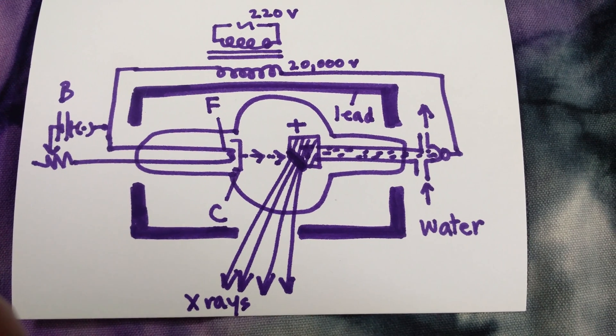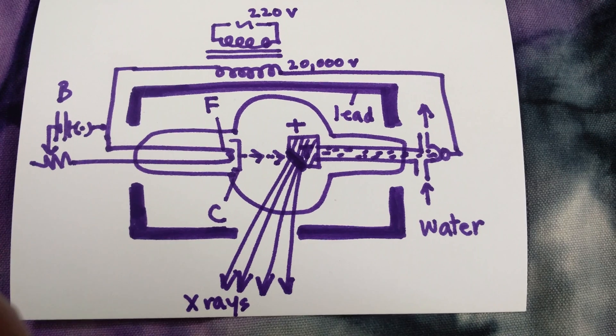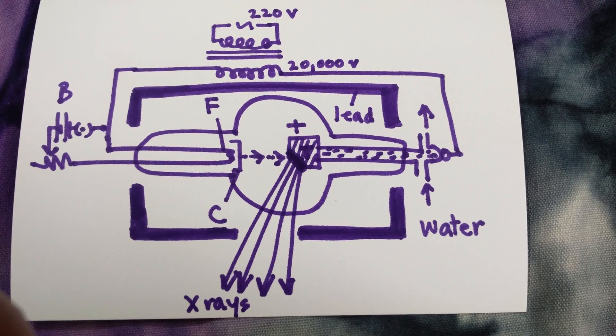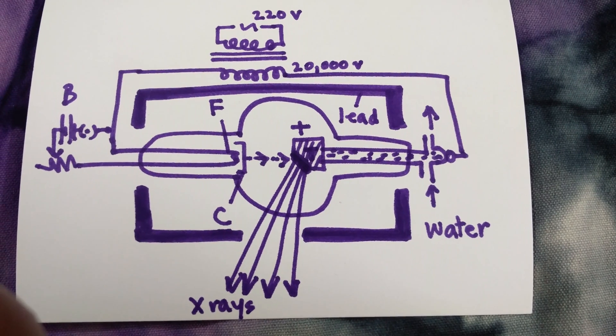That is why the tube acts as its own rectifier. During one half cycle, it attracts the electrons and generates heat. During the other half cycle, it repels them, giving time for the water to remove the heat and prevent the target from melting.